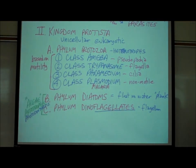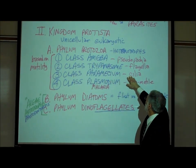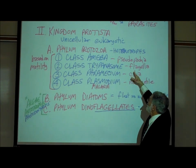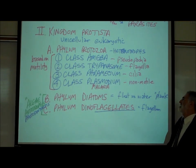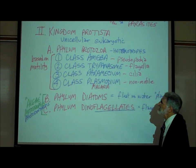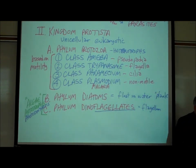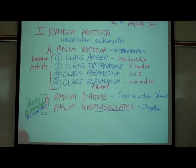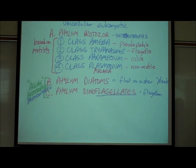To summarize the four classes of protozoans: class Amoeba move by pseudopodia; class Trypanosoma move by flagella and cause African sleeping sickness; class Paramecium move by cilia; and class Plasmodium are non-motile parasites that cause malaria.